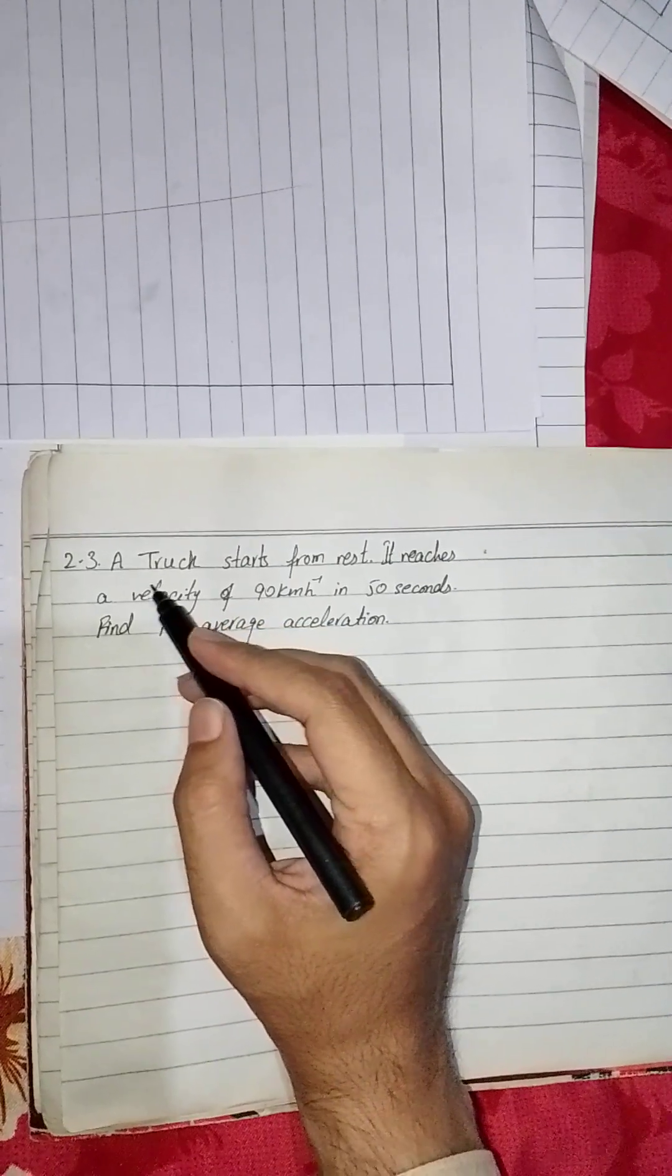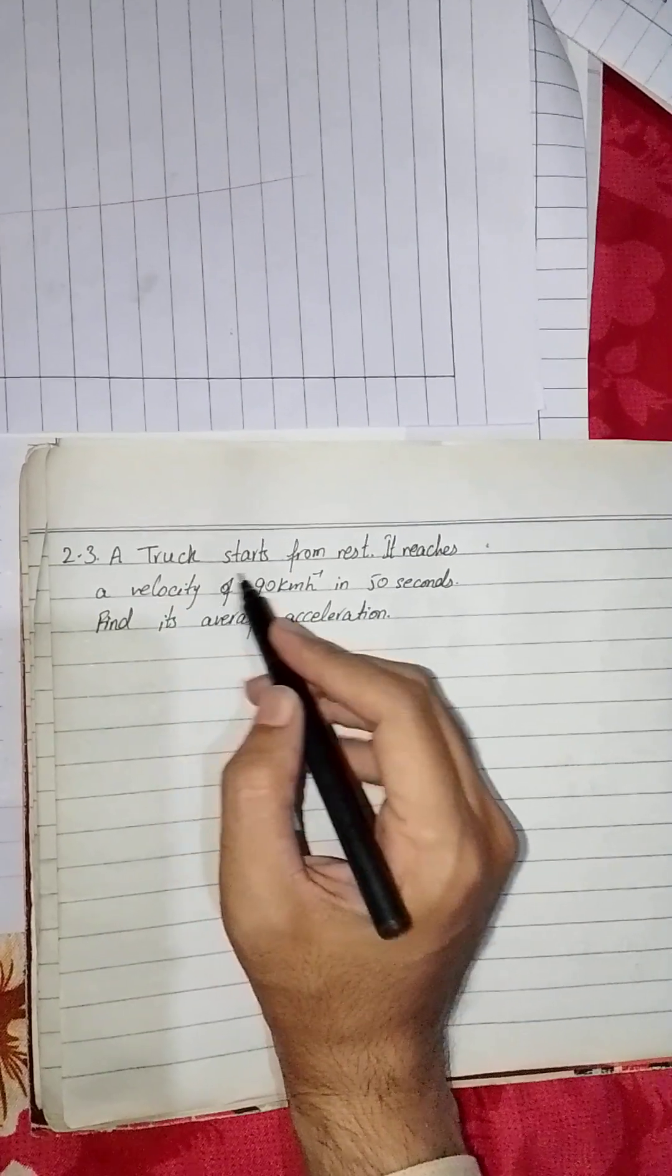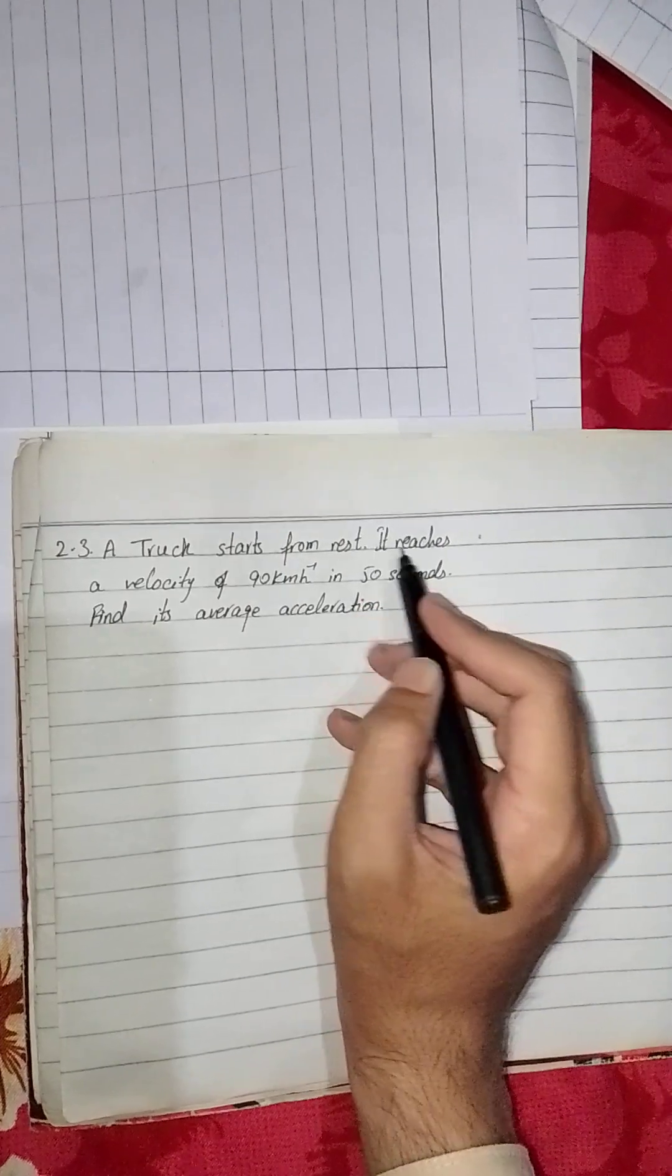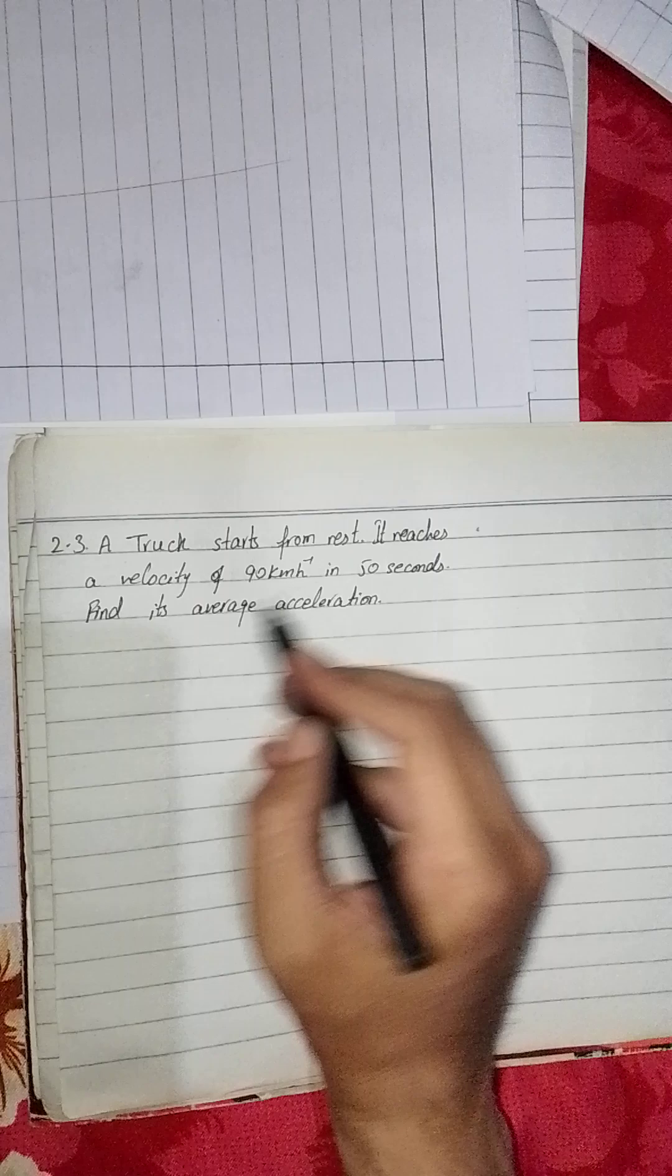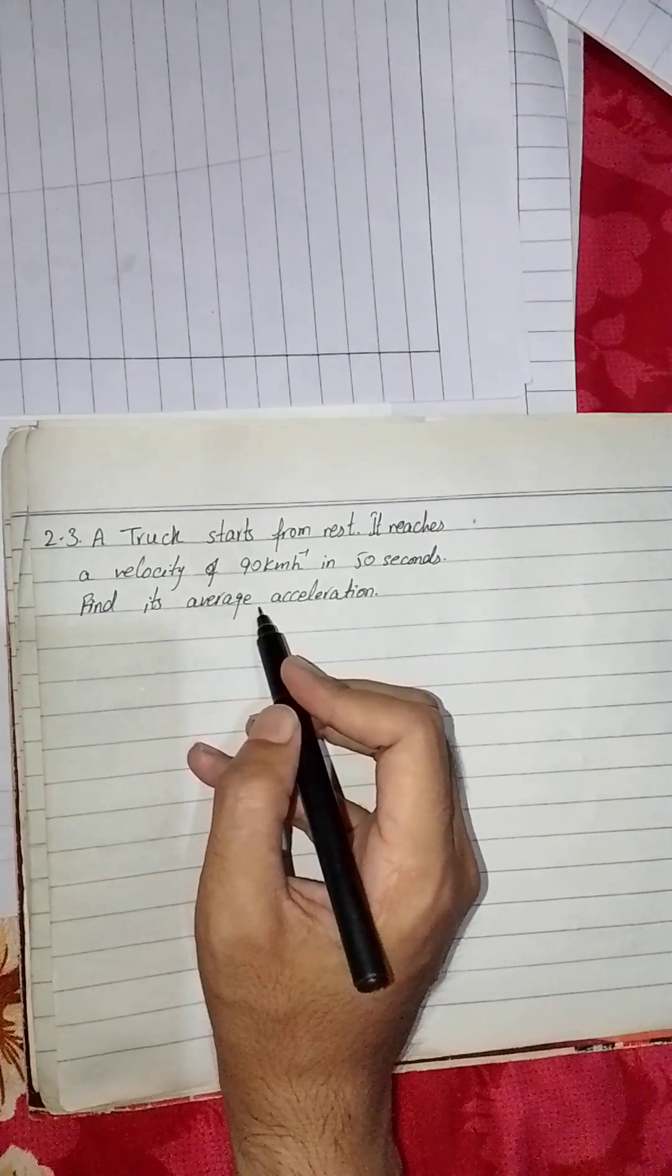Hello friends. Today's physics problem is: A truck starts from rest, reaches a velocity of 90 km per hour in 50 seconds. Find its average velocity.